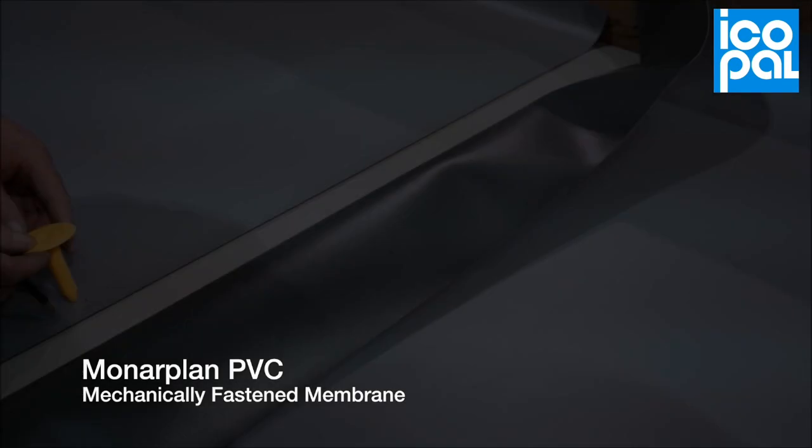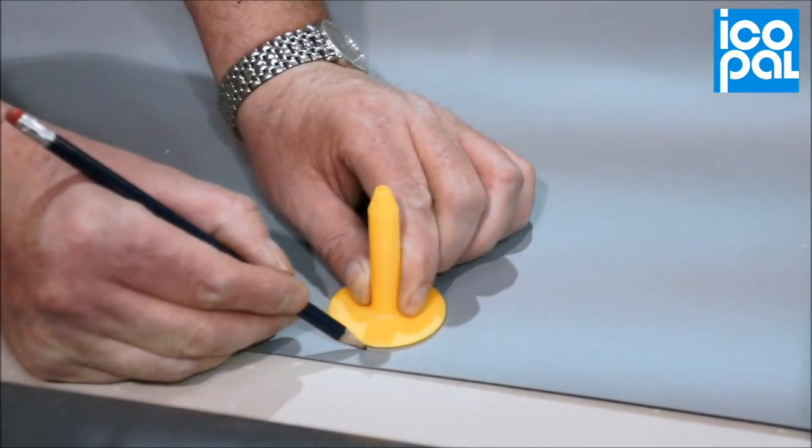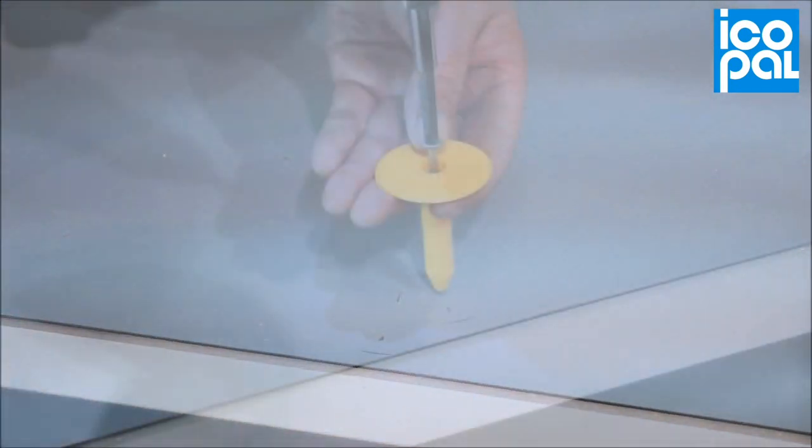Monoplan PVC Mechanically Fastened Membrane. Position the monoplan tube washer 10mm in from the edge of the row and mark the membrane.